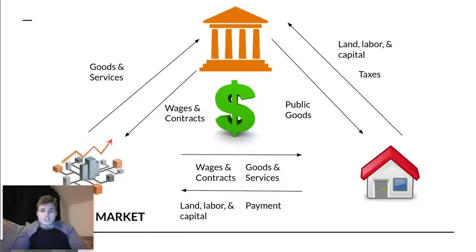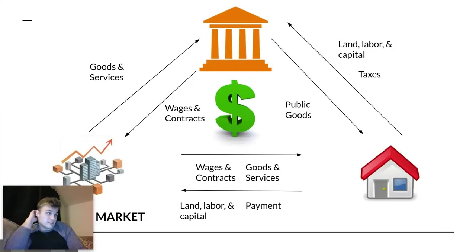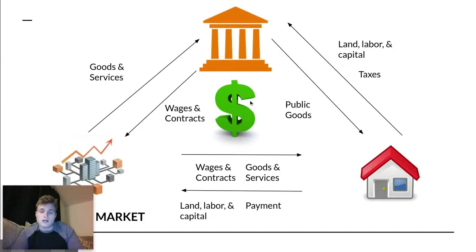Households like you and I also provide taxes, which are then used to fund a number of government programs. In exchange, when we pay our taxes, we get public goods like roads, schools, libraries, fire stations, police stations, cop cars — all the things that we need to keep our society safe, clean, and orderly — all in the form of public goods.